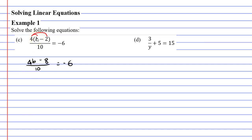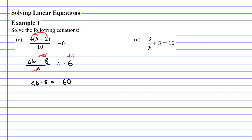The next thing we want to do is cancel out this 10, which means we need to multiply by 10, and we're going to multiply every term by 10. A lot of people make the mistake of multiplying the 4B by 10 as well as the 8 by 10, but because this is one single fraction it's also one single term, so I'm only multiplying it once. That will cancel the 10 below, leaving us with 4B minus 8. And negative 6 times 10 is negative 60.